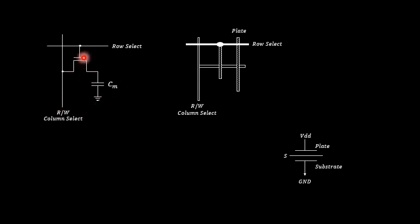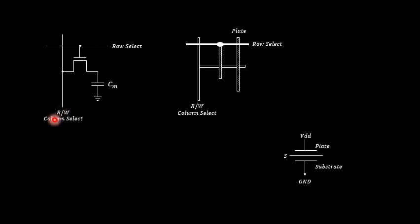Since it is an nMOS transistor, it has a gate terminal, drain terminal, and source terminal. The signal applied to the gate terminal decides whether the transistor is turned on or turned off. There is a row select line as well as a column select line. The column select line is marked as R or W, standing for read or write operation. These are mutually exclusive: if the read signal is one, write is zero, and vice versa.